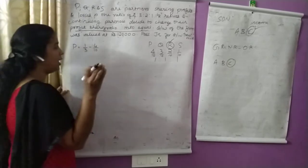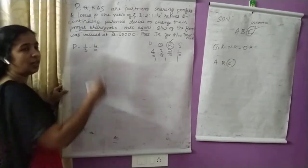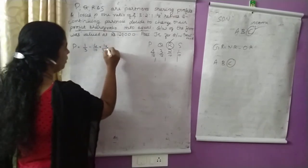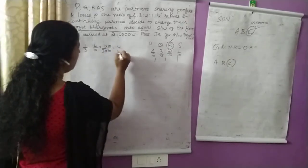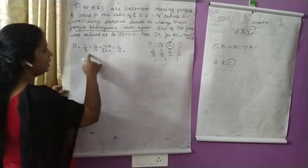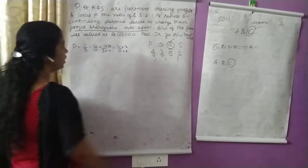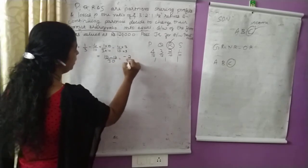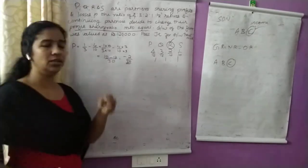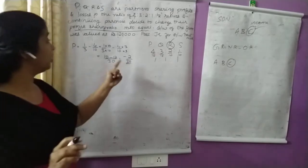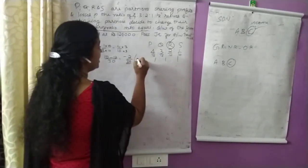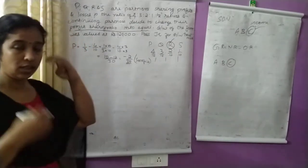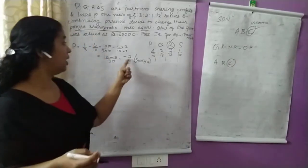To calculate, multiply: 1 by 3 — multiply numerator by 10, and 4 by 10 — multiply numerator by 3. We get 10 by 30 minus 12 by 30 equals minus 2 by 30. Since the result is negative, this means P is sacrificing, not gaining. The sacrifice ratio for P is 2 by 30.